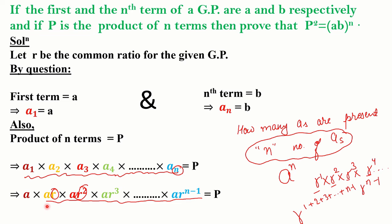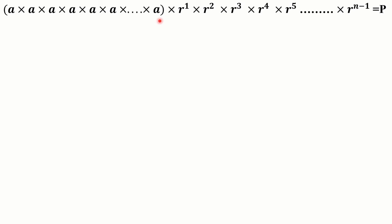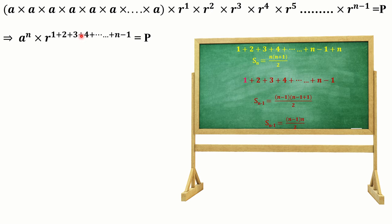Writing all the a's together and all the r terms together: we get a^n multiplied by r raised to the power (1 + 2 + 3 + ... + (n-1)). There are n a's, so we get a^n. Since the bases are the same, powers are added. We have learnt that the sum of first n natural numbers is given by n(n+1)/2.